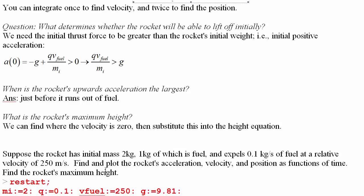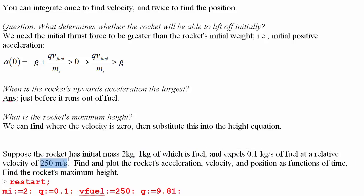For specific numbers: the rocket has an initial mass of 2 kilograms, 1 kilogram of which is fuel. It expels 0.1 kilograms per second of fuel at a relative velocity of 250 meters per second. Find and plot the rocket's acceleration, velocity, and position as functions of time, then find the rocket's maximum height. Use Maple to help with the actual numbers, specific answers, and plots.